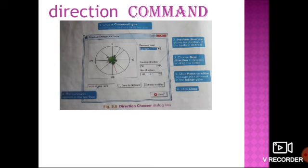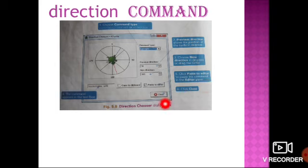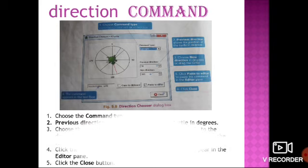In the dialog box, you can see the previous direction, which shows the position of the turtle in degrees. The new direction shows where you want to move your turtle. You have to choose the new direction in degrees or drag the turtle in any direction you want. The command — for example, Turn Right 135 — appears in the text box, and then you have to click Paste to Editor to paste the command in the editor pane, and then click Close.